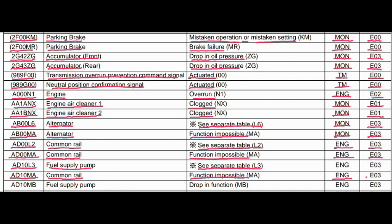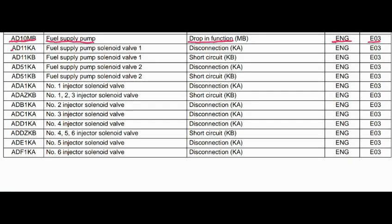Code AD10MB. Where is the problem? Fuel supply pump. What is the problem? Drop in function. Engine control is related to this fault, and the action code is E03. Code AD11KA — where is the problem? Fuel supply pump solenoid valve 1. What is the problem? Short circuit. Engine control is related to this fault, and the action code is E03.